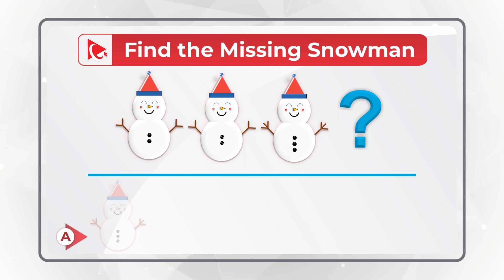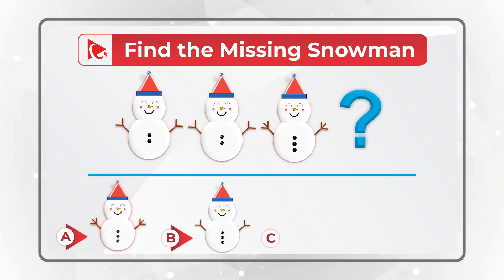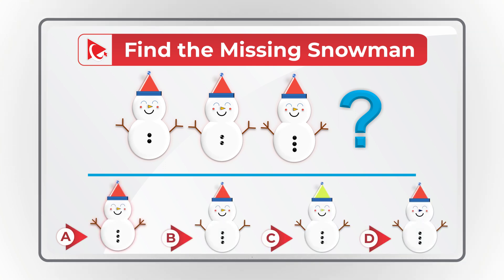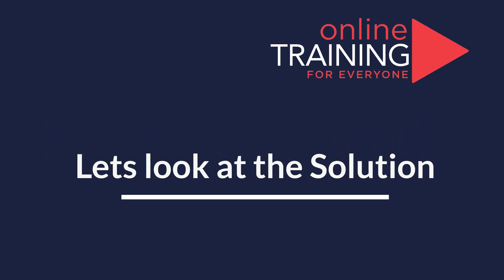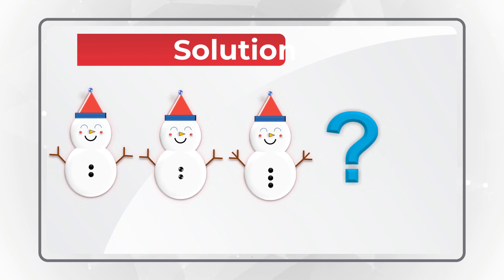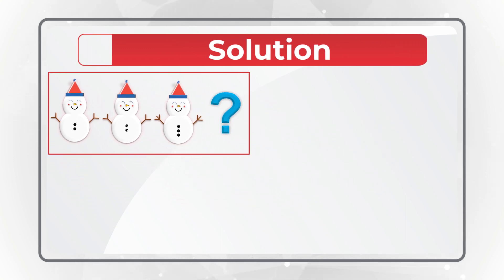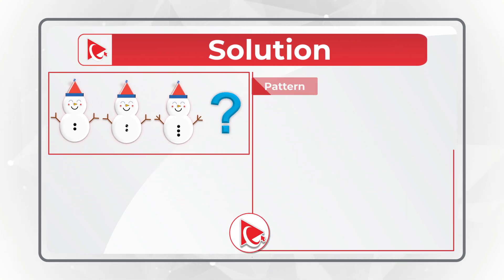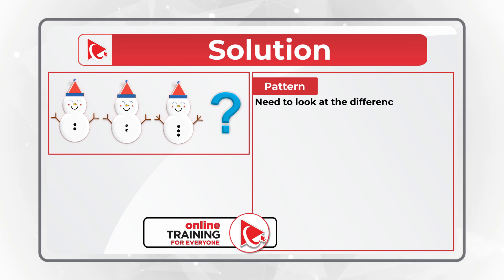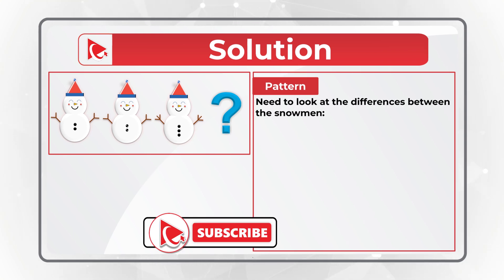Choices A, B, C, and D. Take a close look to see if you can find the missing snowman. Did you find it? Let's move forward to see if we can get to the correct solution together. If you watched enough videos on this channel, I hope you learned one trick — to find the answer, you need to look for patterns. And in this case, the pattern is the difference between the snowmen.